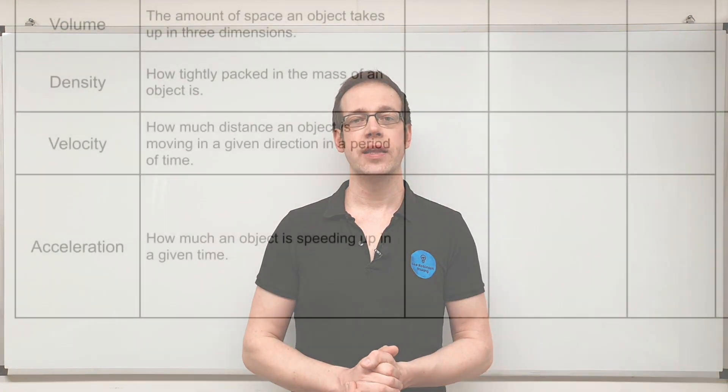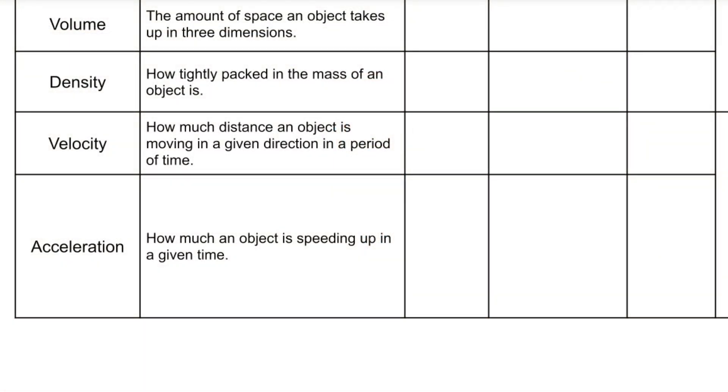Now when we start to think about our SI units first of all we want to think about the mathematical symbol that we're going to be using and the mathematical symbol is a lowercase v. Now it's really important to remember we don't measure this in miles per hour. So when you're driving along in your car obviously you're probably used to your needle registering miles per hour if you're in the UK or in America.